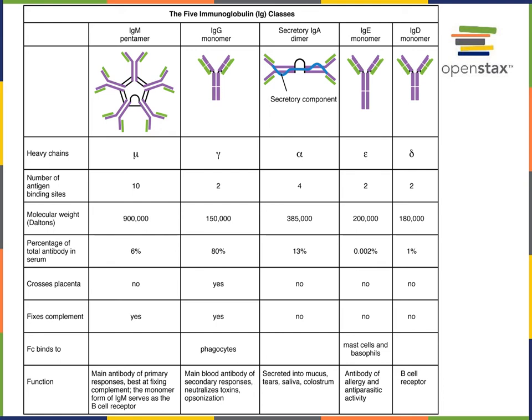The IgD monomer functions as a B cell receptor embedded in the plasma membrane of B lymphocytes. There is also a monomer form of the IgM antibody that functions as a B cell receptor. However, the IgM antibody also forms pentamers, as shown in the illustration, where five IgM antibodies are linked together.